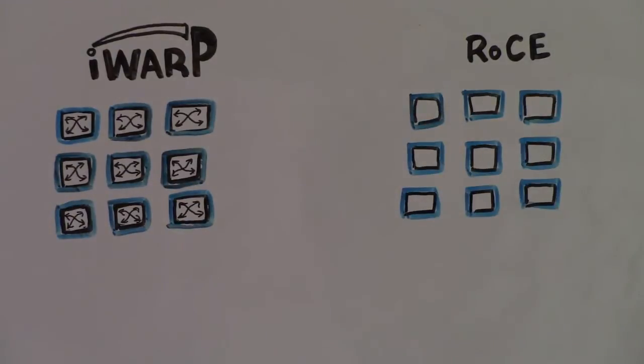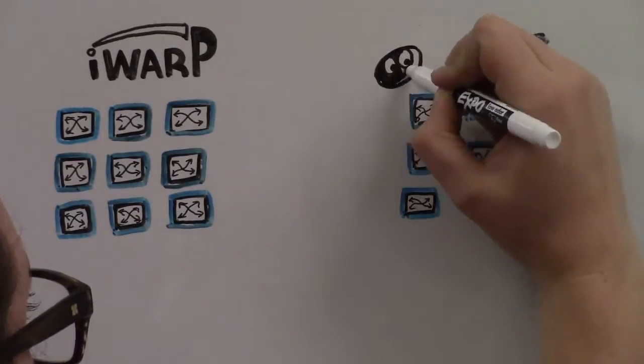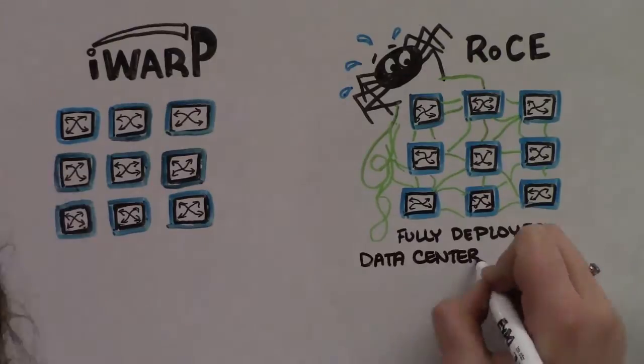RoCE's first challenge is that within the local subnet, sometimes called the L2 subnet, RoCE requires fully deployed data center bridging technology to make its network lossless. In practice, that means that data center admins need to physically configure every switch to support the DCB traffic classes.